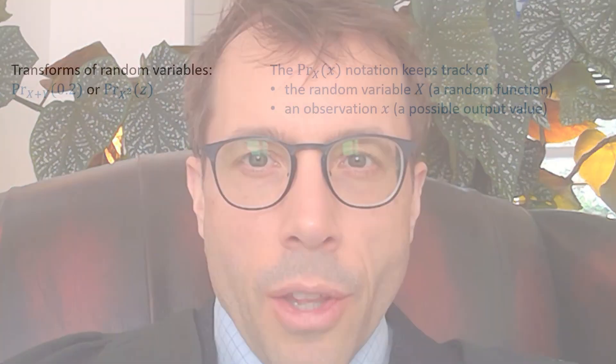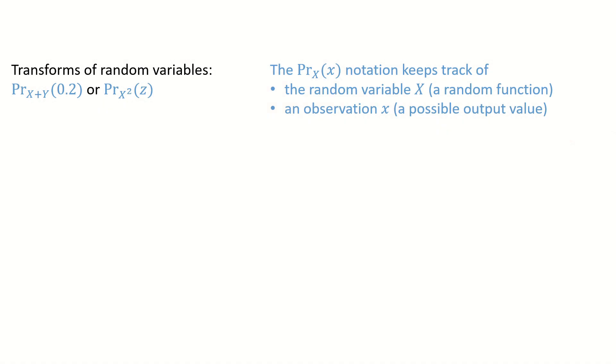The first point to make is that the notation keeps track of two different things. There's the random variable big X, which is a function. It's a function that uses the random number generator, so it gives a different answer each time we run it. And then there's the observation little x, which is one possible output value from the function.